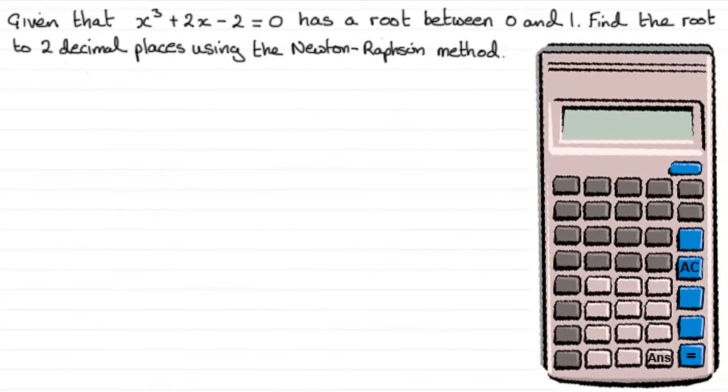Hi, welcome to another video in my series on numerical methods of solving equations. In the previous tutorials I've shown you how we can solve this equation x³ + 2x - 2 = 0 knowing that it has a root between 0 and 1, and we looked at the bisection method and linear interpolation.